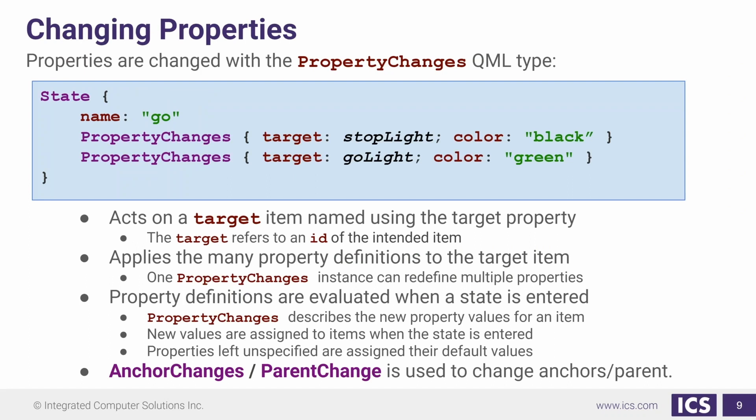The next thing we're going to do is add some property changes. States don't do anything if we just define a name. Here we're going to use the QML type PropertyChanges. This has two properties. The one property that we have to set is target. That is the target ID of the item, the item whose properties we want to change. Here we are changing the color property.